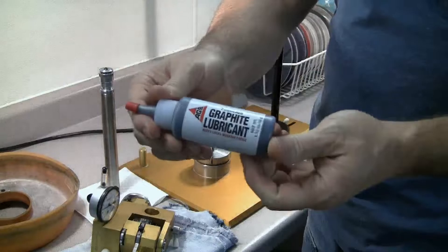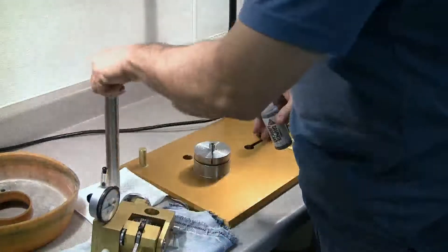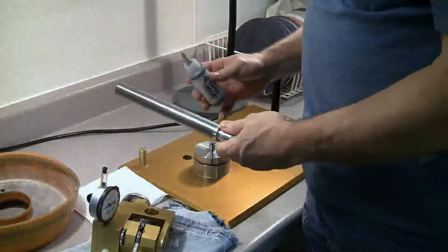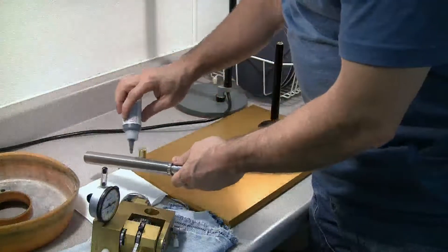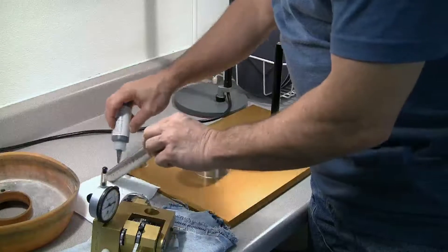The factory doesn't actually recommend or suggest that you need some. Personally, I like a little dry graphite lubrication. It's a little bit messy, but it makes things work smoothly. So I put a little graphite on the mast.